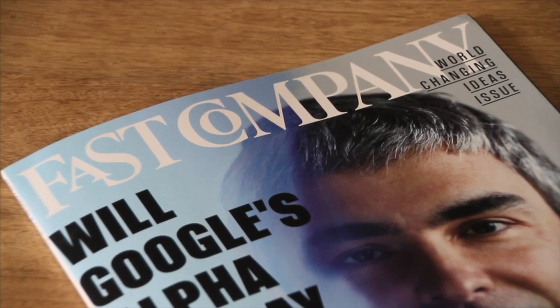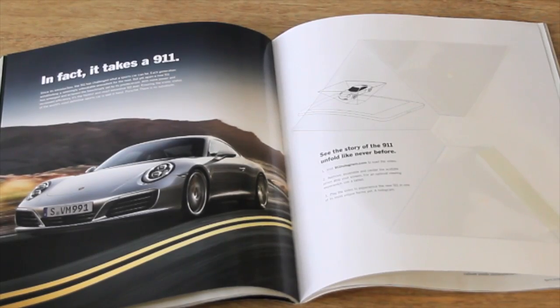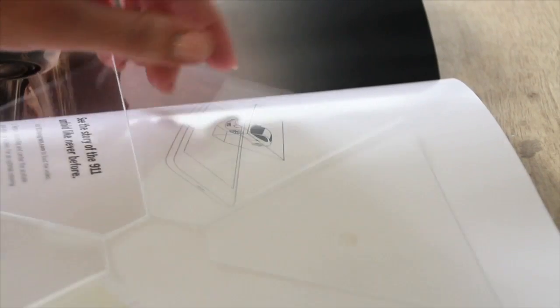In the April issue of Fast Company Magazine, we inserted a four-page spread featuring the new 911. One of the pages contained an acetate prism and instructions for using it.